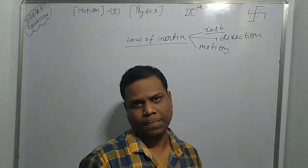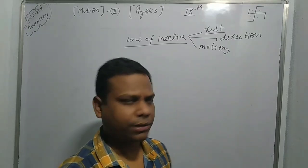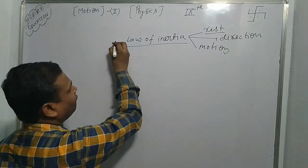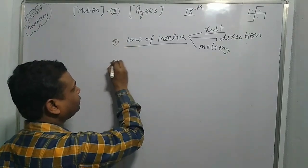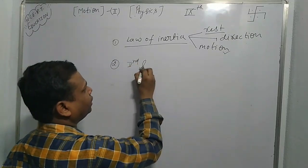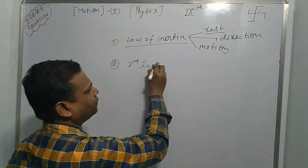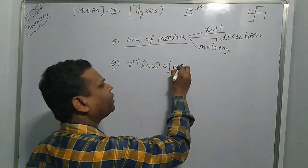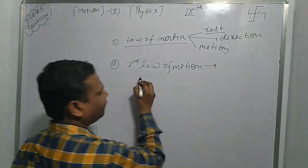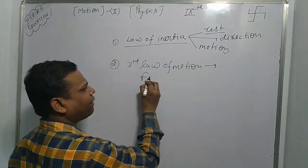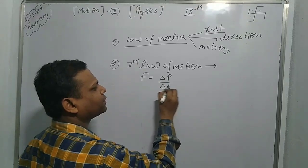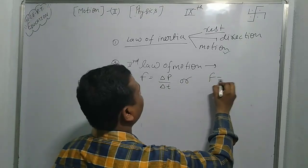The law of inertia is Newton's First Law of Motion. Now Newton's Second Law of Motion, which is important. It has two forms: F equals delta P upon delta T, or F equals MA.